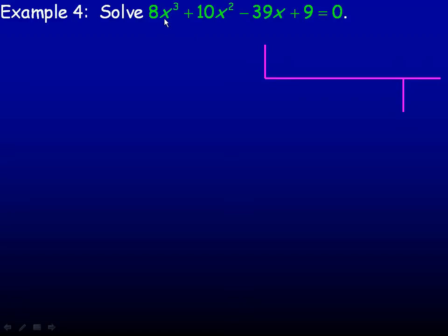In Example 4, we are asked to solve 8x³ + 10x² - 39x + 9 = 0.